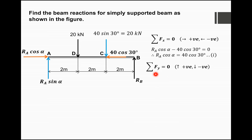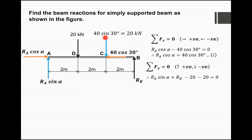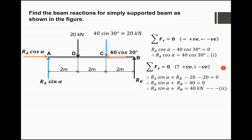Applying the second condition, ΣFy = 0, with upward forces positive and downward negative: Ra·sin(α) and Rb both act upward, while the 20 kN load at D and 40·sin(30°) = 20 kN at C both act downward. This gives Ra·sin(α) + Rb − 20 − 20 = 0, or Equation 2: Ra·sin(α) + Rb = 40 kN.